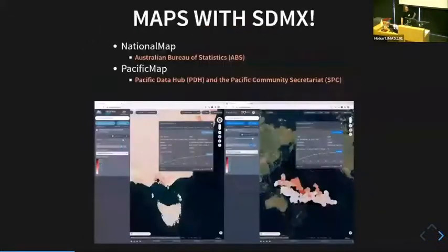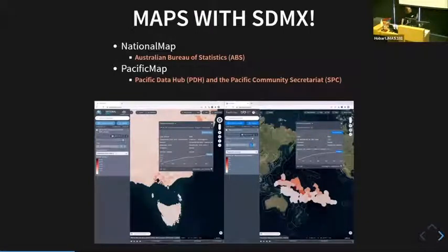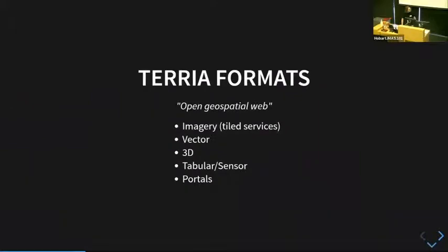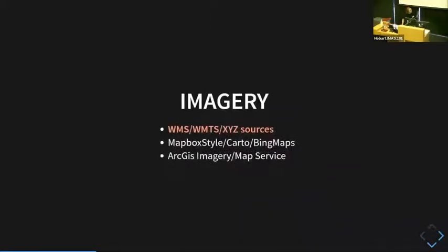Maps with SDMX — two maps at the moment. National Map is showing off Australian Bureau of Statistics data. We've also got Pacific Map, which is in collaboration with the Pacific Data Hub and Pacific Community Secretariat. As far as the formats that Terrier supports — the talk does say integrating OGC Spatial Web — there are five different categories: imagery, tiled services, vector data, 3D data, tabular sensor data, and data portals. The bold ones are the open source ones.